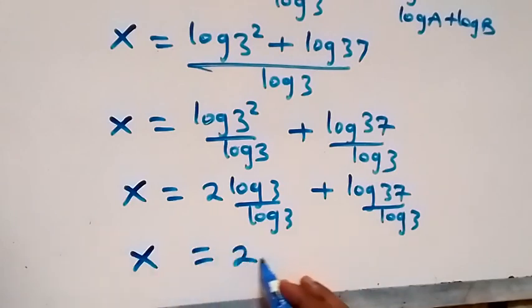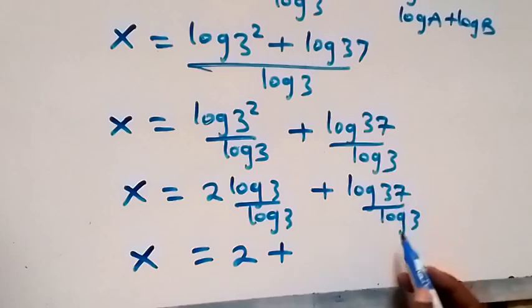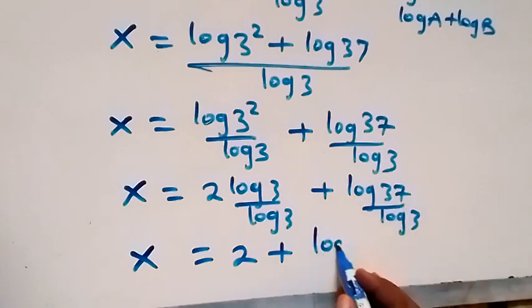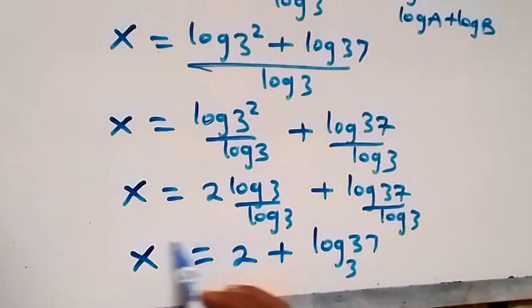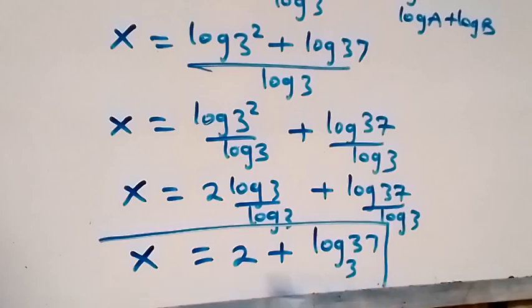So we have x equals to 2 plus. Here we can use change of base and write this as log 37 base 3. So here we have the solution to this problem, which is x equals to 2 plus log 37 base 3.